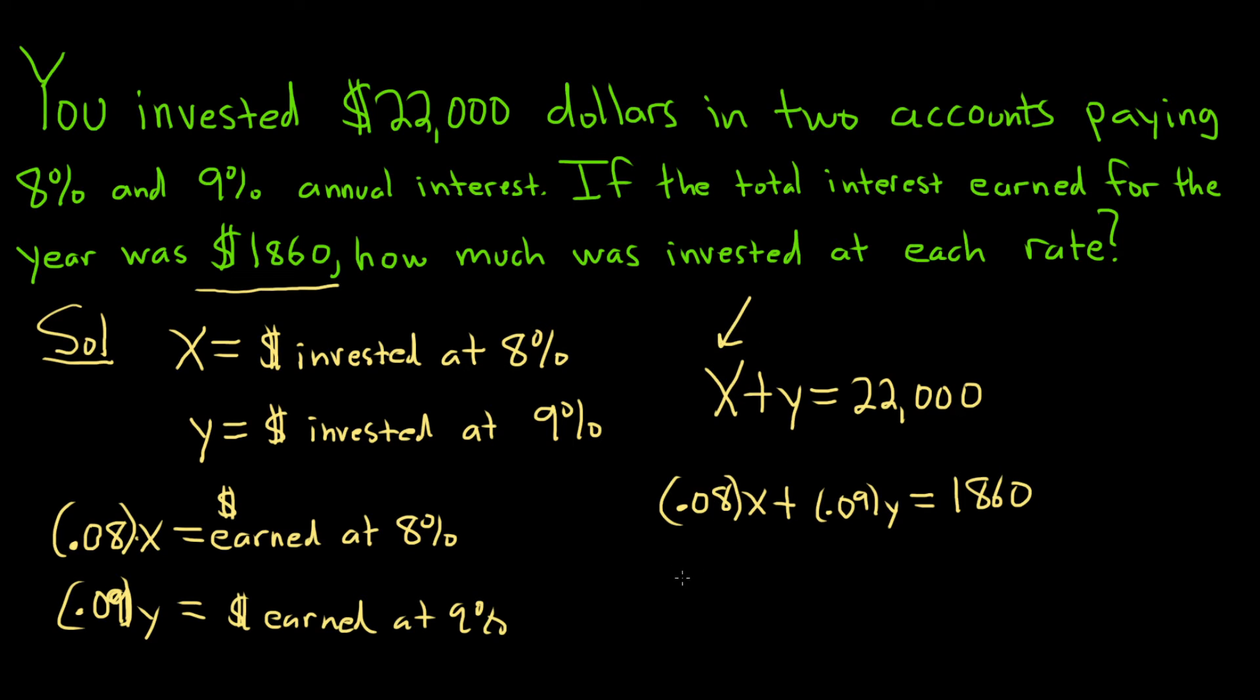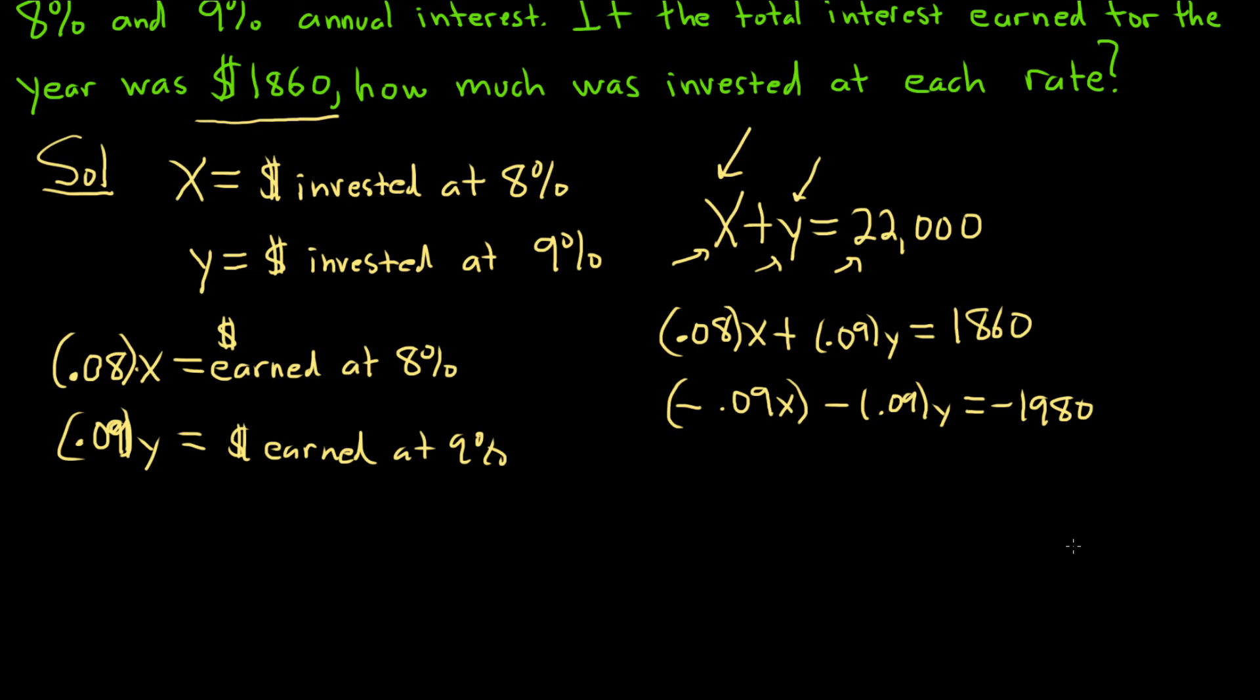Let's multiply both sides by negative 0.09. So we would get negative 0.09X and then negative 0.09Y. Now let's do it here, negative 0.09 times 22,000, I have to use a calculator. So that's going to be negative 1980. Good stuff.